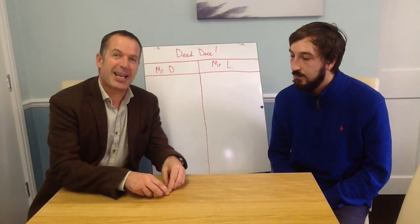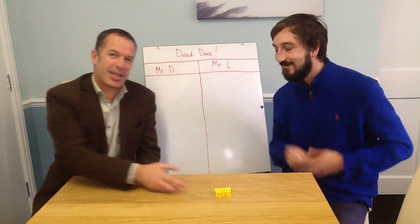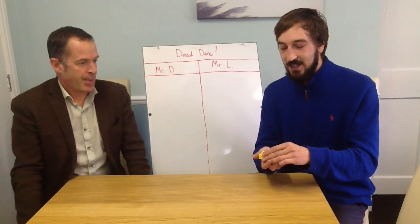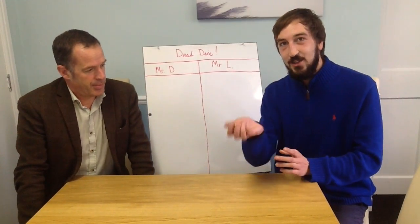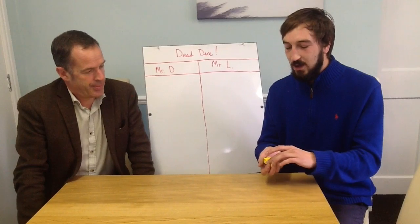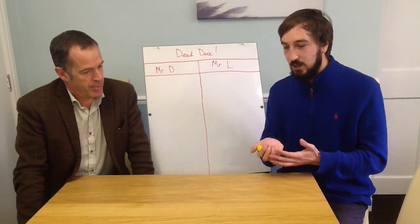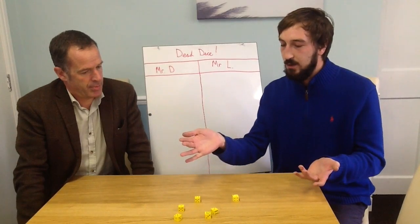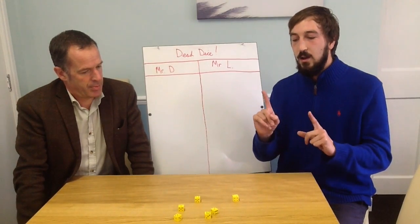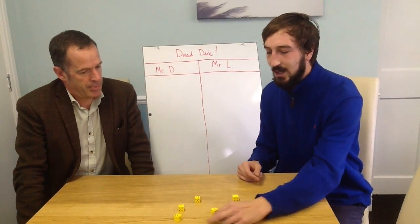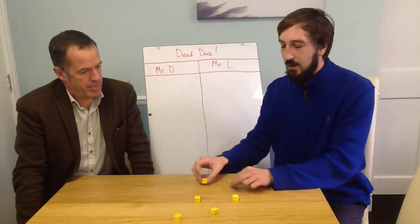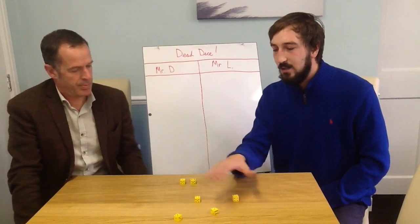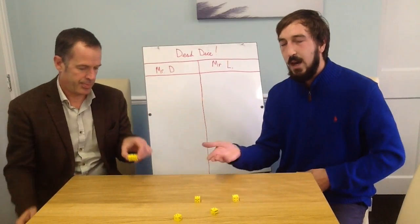I'm going to ask Mr. Langley if he would do the honours and introduce the game, or how to play it. No problem. As Mr. Davis has said, you need your 6 dice. One player needs to start with all the dice and roll them. The key thing is, a 6 or a 1 are the 2 dice that you need to remove, and then the rest of the dice you need to add up — that is your score.